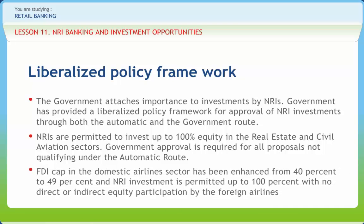FDI cap in the domestic airline sector has been enhanced from 40% to 49% and NRI investment is permitted up to 100% with no direct or indirect equity participation by foreign airlines. Guidelines for approval of foreign or technical collaborations for projects with existing joint ventures in the same field have been reviewed. As a measure towards simplification of existing FDI procedures, the following activities have been placed on the general permission route of RBI: transfer of shares in an existing Indian company from residents to non-residents and vice versa, except in the financial sector and where SEBI takeover code is attracted; conversion of ECB or loan into equity provided the activity is covered under the automatic route and the foreign equity after such conversion falls within the sectoral cap.